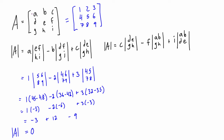I also want to show that we could have found the determinant using column 3 instead of row 1. Any row or any column works, as long as we follow the method of alternating positive, negative, positive and multiplying each element by the determinant of its sub-matrix. Element c is 3 times the determinant of [4,5,7,8], minus f which is 6 times the determinant of [1,2,7,8], plus i which is 9 times the determinant of [1,2,4,5].